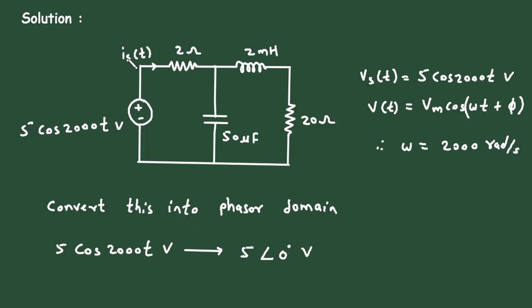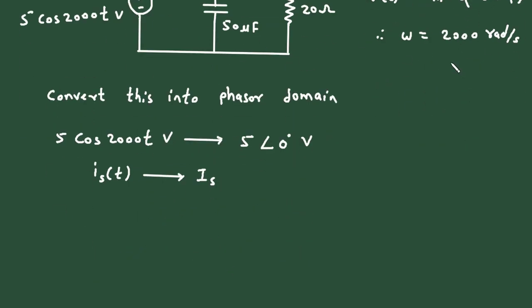Next, is(t) will be changed to capital IS in phasor domain. The 2 ohm resistor will remain the same — 2 ohms.